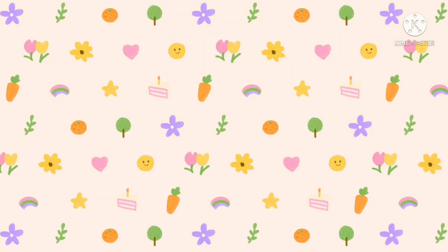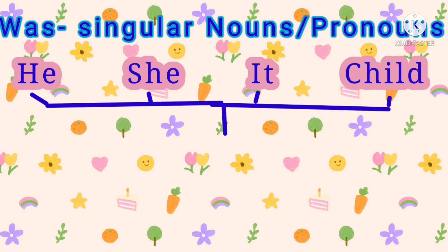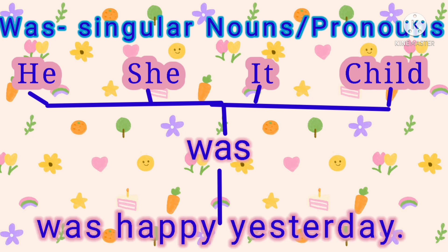You have to learn this: was is always used with singular nouns or pronouns. See here are some pronouns — he, she, it — and a noun: child. Since these are all in the singular form, we will use was. Were nahi use kiya hai kyunki hum yahan par singular noun and pronoun le rahe hain.